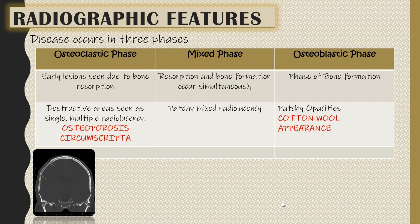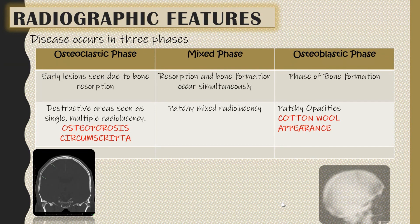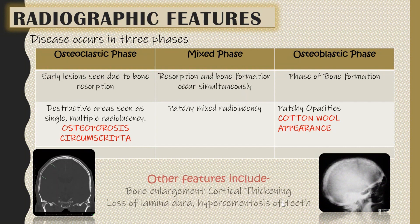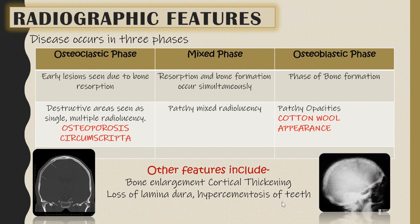The osteoblastic phase is the phase of bone formation. The radiographic picture shows patchy radio-opacities giving a cotton wool appearance. Other features include bone enlargement, cortical thickening, loss of lamina dura, and hypercementosis of teeth.